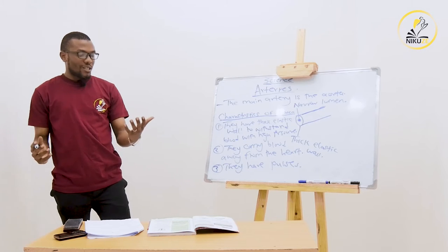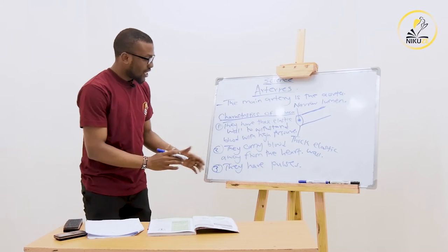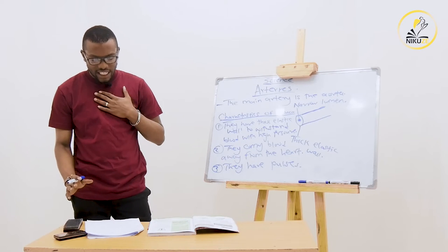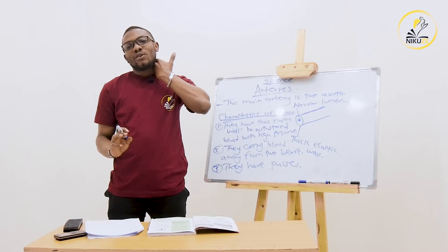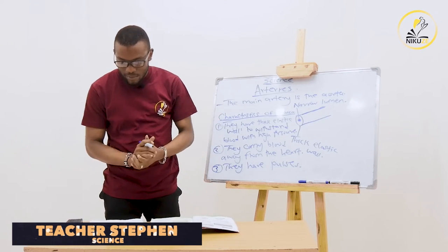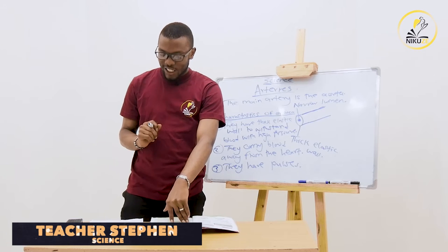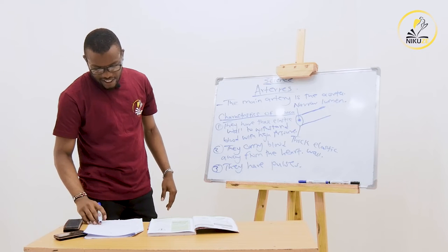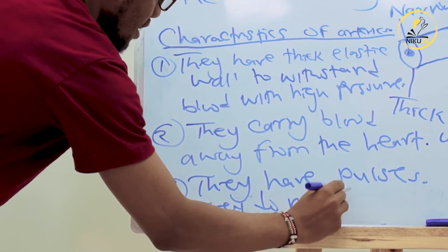You cannot see arteries - they are deep inside the body, unlike veins which you can see. A pulse is simply an indicator of the pumping action - it shows that the blood is pumping in your body. If you hold your chest or your neck you can feel something beating - that is what we call the pulse, a heartbeat. Number four: arteries do not have valves.